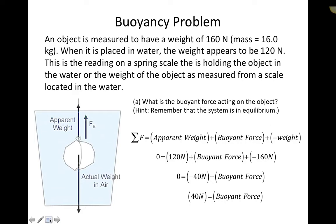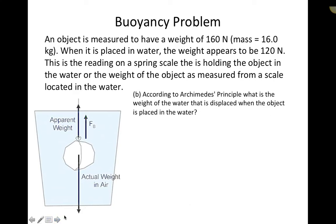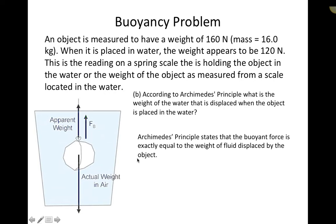The next question asks: according to Archimedes' principle, what is the weight of the fluid displaced when the object is placed in water? Archimedes' principle states that the buoyant force is always exactly equal to the weight of the fluid displaced by the object. So the weight of the water displaced equals the buoyant force, which we found to be 40 newtons.